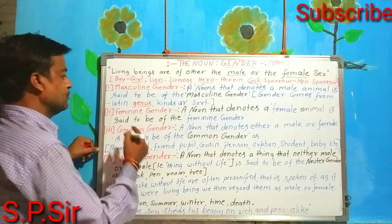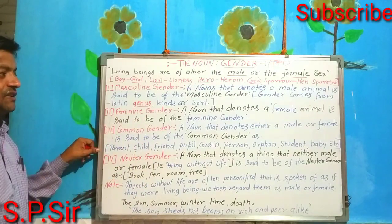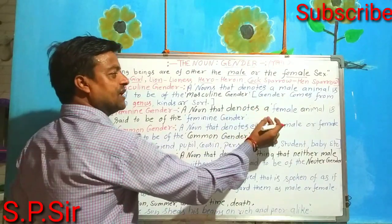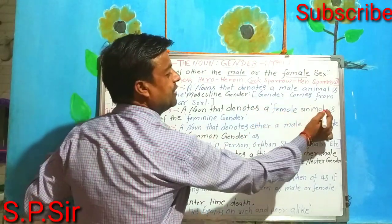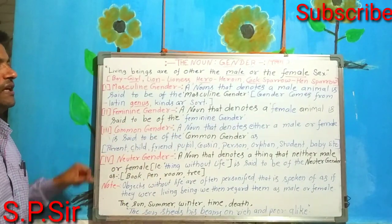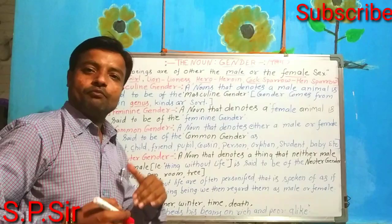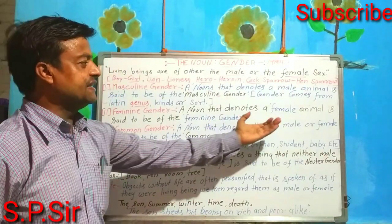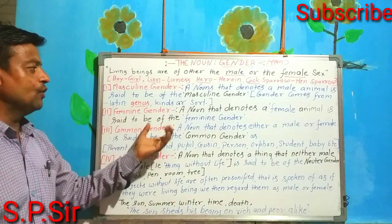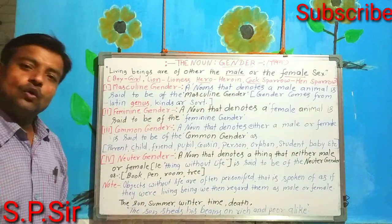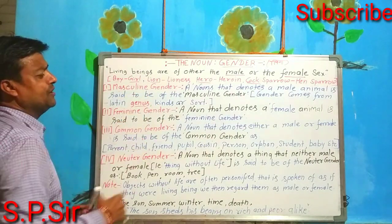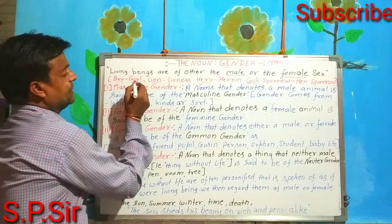The next one is feminine gender. A noun that denotes a female is said to be of the feminine gender. So both masculine gender and feminine gender have their definitions here, and the feminine gender describes the female counterpart.